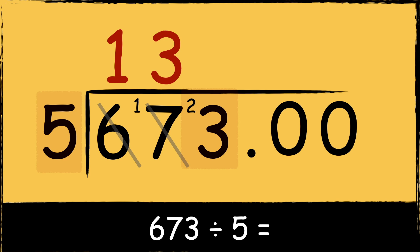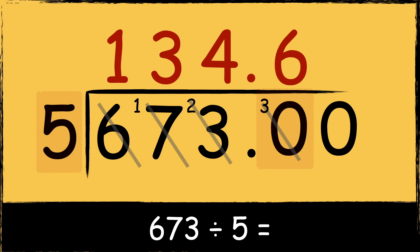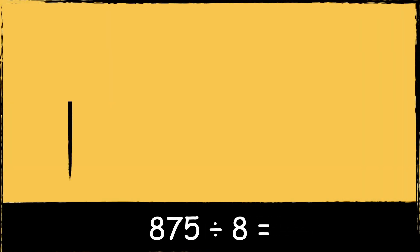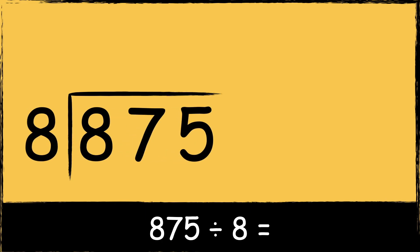Five goes into twenty three times with three left over. As we're now working after the decimal point, we also need to place a decimal point in the answer. Five goes into thirty six times with nothing left over, so the answer is 134.6. Here's the next example: 875 divided by 8.